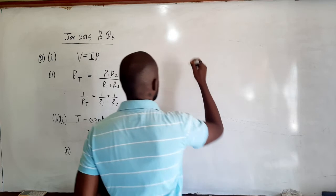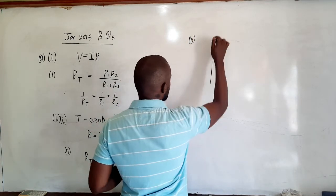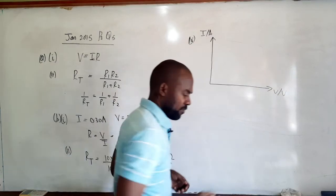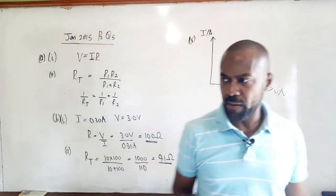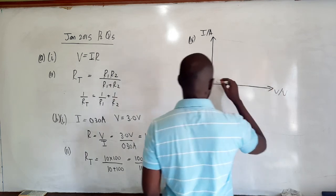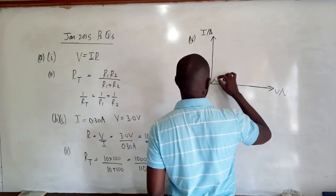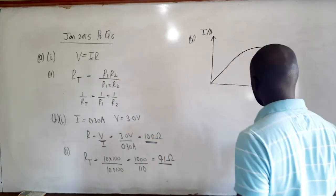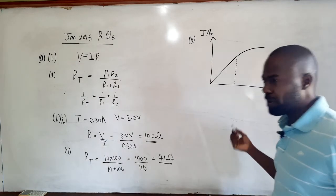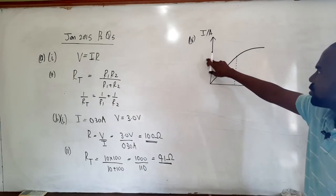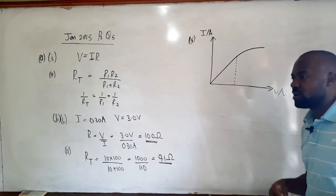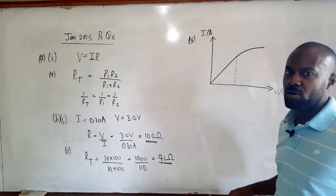For Part B4, plotting current I in amperes against voltage V in volts for a filament lamp: at low currents it is a straight line, but then it starts to curve. The straight-line portion is called the ohmic region, because within this region the current is directly proportional to the voltage and Ohm's law is obeyed. However, as current increases, the temperature of the filament rises, causing an increase in resistance.